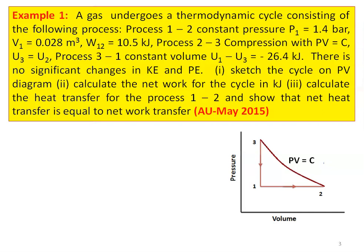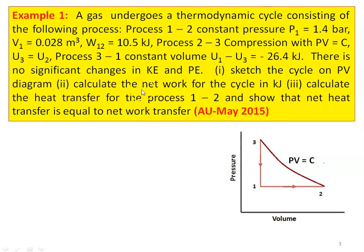This is example number 1 from the May 2015 examination. A gas undergoes a thermodynamic cycle consisting of the following processes: Process 1 to 2 is a constant pressure process, where P1 = 1.4 bar, V1 = 0.028 m³, and work done = 10.5 kJ. Process 2 to 3 is compression with PV = constant, where U2 = U3 — an isothermal compression process. Process 3 to 1 is a constant volume process, with U1 − U3 = −26.4 kJ. There is no significant change in kinetic or potential energy. Tasks: (1) sketch the cycle on the PV diagram, (2) calculate the net work for the cycle in kJ, and (3) calculate the heat transfer for process 1 to 2.